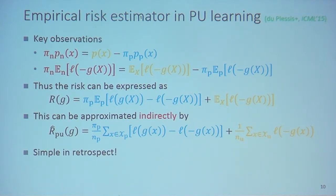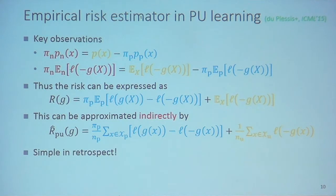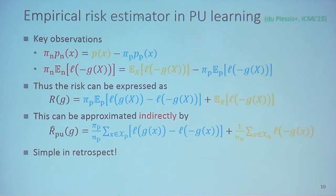Intuitively, what does this equation mean? This equation means we regard all unlabeled data as negative data. However, since there are many positive data inside the unlabeled data, in order to cancel this bias we also regard positive data as negative and then subtract this risk from the risk we want to minimize. That is the intuitive explanation of the equation.